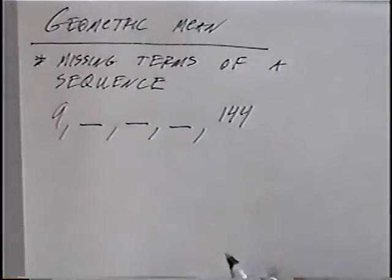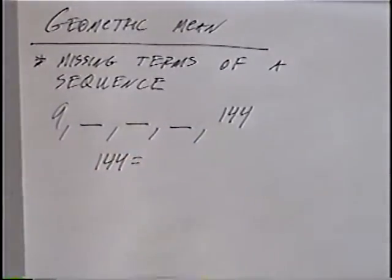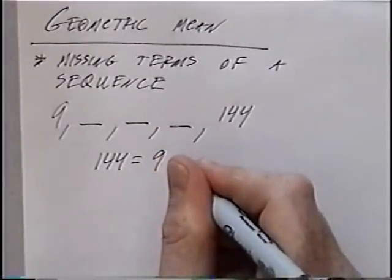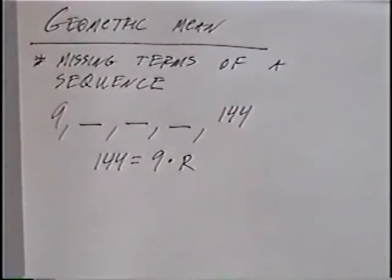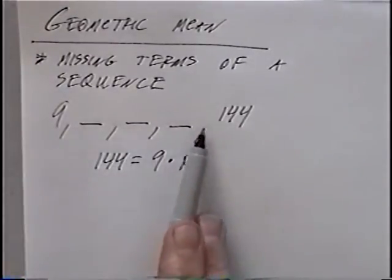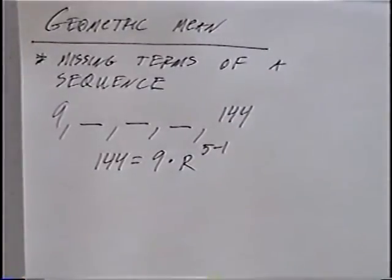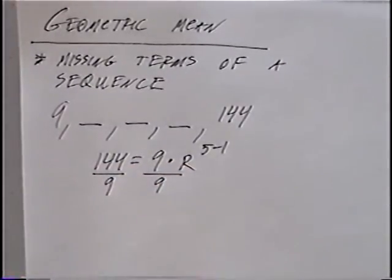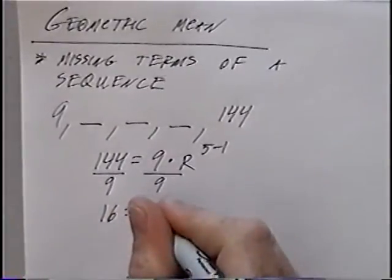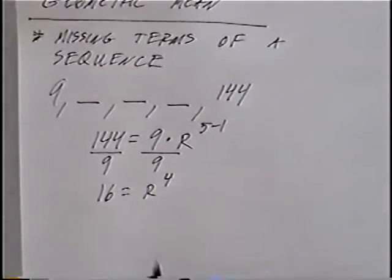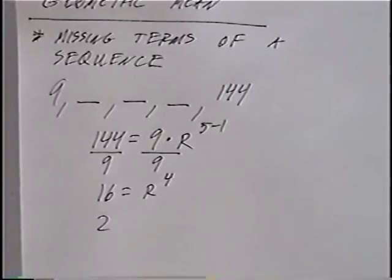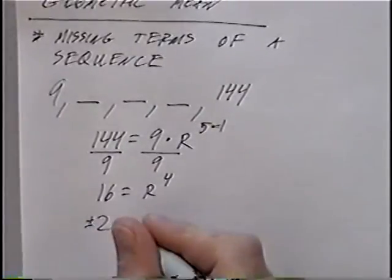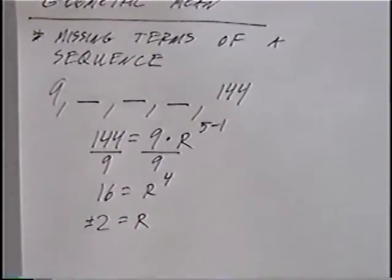Using the geometric formula: 144 equals 9 times r to the exponent 5 minus 1, or r to the 4th power. Dividing both sides by 9: 144 divided by 9 equals 16, so r to the 4th power equals 16. We need a number whose 4th power is 16. That number is 2, since 2 to the 4th is 16. But negative 2 also works, since negative 2 to the 4th power is also 16. So r equals plus or minus 2.